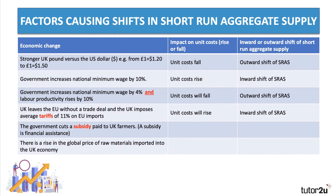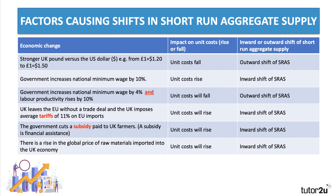Example five: the government cuts a subsidy paid to farmers. A subsidy is a form of financial assistance — the opposite of a tax. If you cut a subsidy, unit costs rise because producers no longer benefit from that financial support, causing an inward shift of supply. Final example: a rise in the global price of raw materials imported into the UK — crude oil, natural gas, copper, cotton, zinc. Other things being the same, unit costs rise again, and if unit costs go up, short-run aggregate supply shifts to the left.